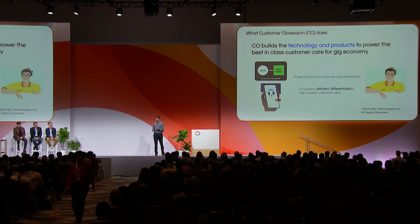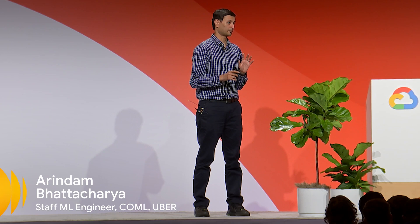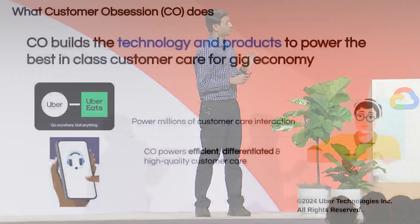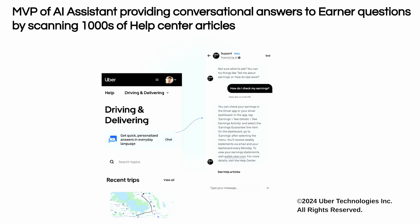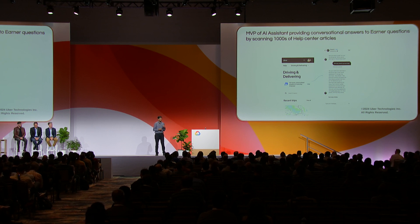Vector Search has a great collaboration with Uber — we're happy to share what we are building with it. Today I'm going to talk about what we are doing in the customer service space. The particular team we represent is Customer Obsession, and the goal is to provide efficient, differentiated, and high-quality customer care for everybody, including Uber Eats and Uber. What we set out to do is build an MVP of an AI assistant that is conversational and answers earners' questions — these are drivers and delivery partners. We have thousands of help center articles that are already present — high-quality articles — but we want to present them to earners in a conversational and robust way.